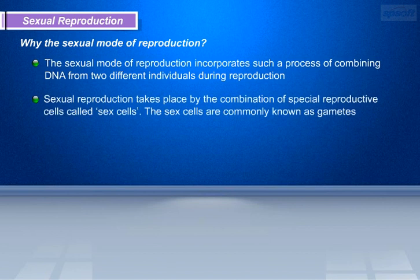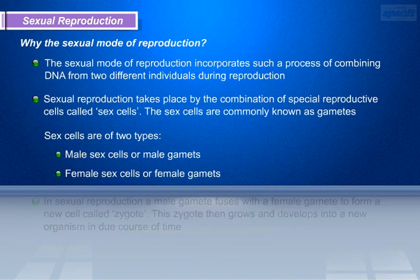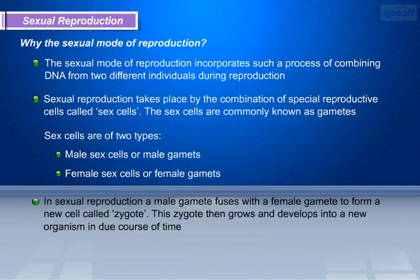Sexual reproduction takes place by the combination of special reproductive cells called sex cells. The sex cells are commonly known as gametes. Sex cells are of two types: male sex cells or male gametes, and female sex cells or female gametes. In sexual reproduction, a male gamete fuses with a female gamete to form a new cell called zygote. This zygote then grows and develops into a new organism in due course of time.